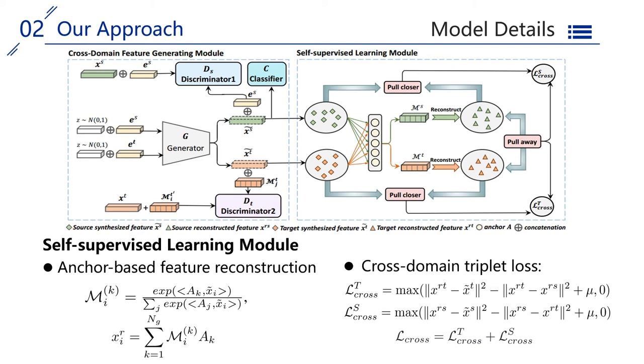We introduce anchors to bridge source and target domain and explore the self-supervised signal that similarity of features from different domains should be much lower than similarity between features and the reconstructed one. Thus, a cross-domain triplet loss is designed to pull away two domains.